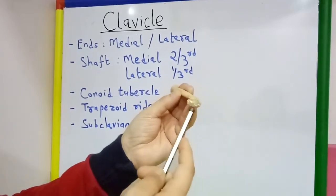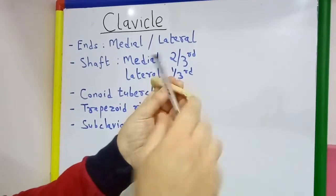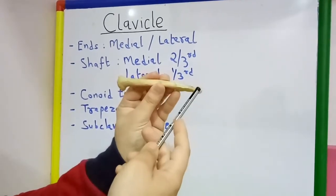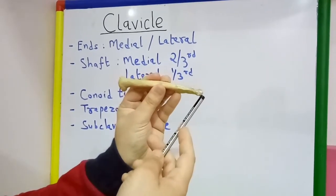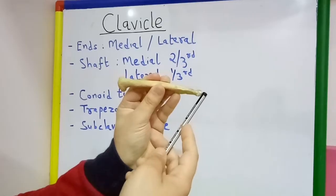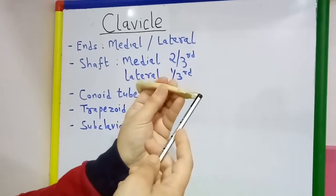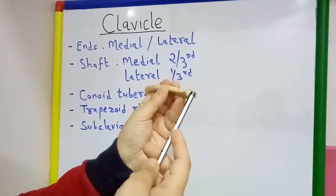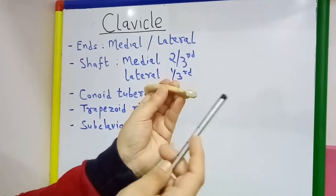The lateral end is flattened from above downwards, and here it has a facet which articulates with the acromion process to form the acromioclavicular joint.